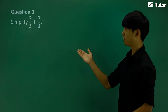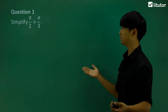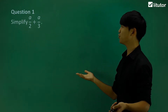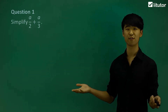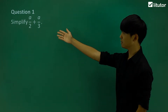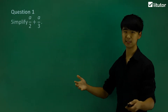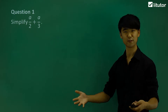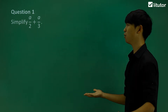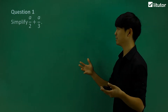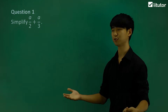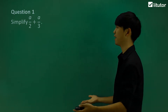If we take a look at question number one, we have to simplify a over 2 plus a over 3. As you can see, the denominators are two different numbers, so what we need to do is create that common denominator. How are we going to do that?